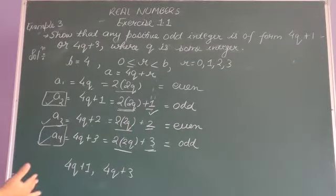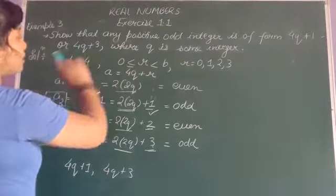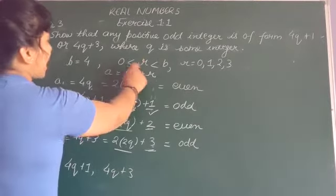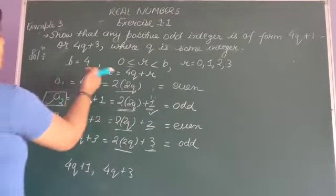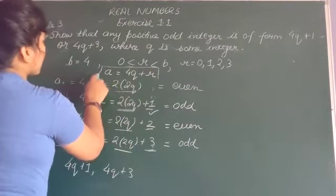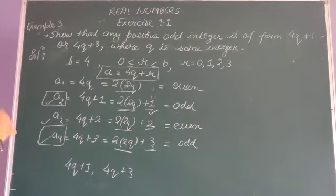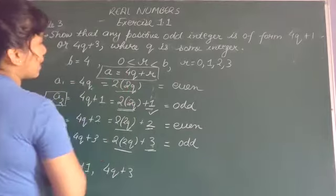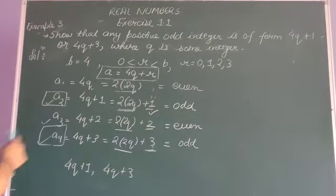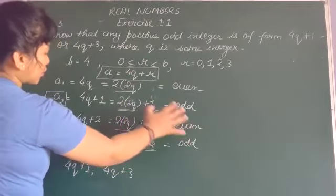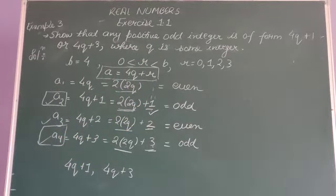इस type की questions आपकी board exam में आने की बहुत chances हैं। बट देखिए, आप लोग इसमें बहुत confused होते हो। Simple trick है — जो भी Q के साथ number आएगा, उसको आप B लोगे, और R की value उस B पर depend होगी। Then आप Euclid's division algorithm जो हमने statement ली है — जो कि Euclid's Lemma होता है — उसे use करोगे। मैं एक video और दे दूंगी जिसमें Euclid's division algorithm और Euclid's division lemma में जो differences हैं वो बता दूंगी। आपने जो statement पढ़ी थी कि A is equal to BQ plus R — वो ही use करना है। B हमारा 4 था, तो हमने वही लेकर यह पूरा question solve कर दिया है और prove कर दिया है कि कोई भी positive odd integer 4Q plus 1 and 4Q plus 3 form में होता है।